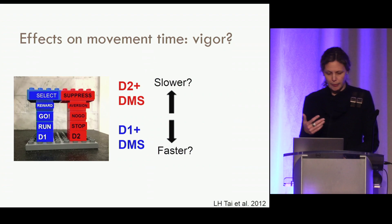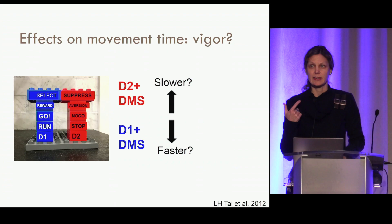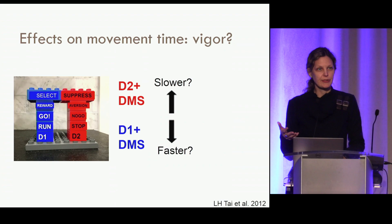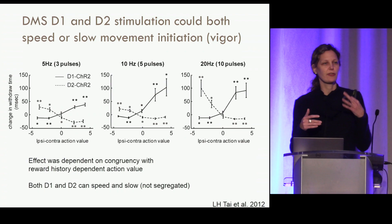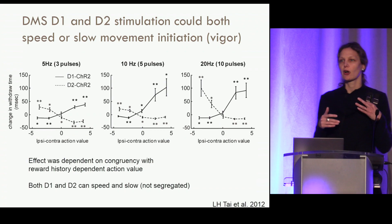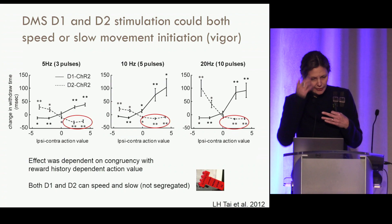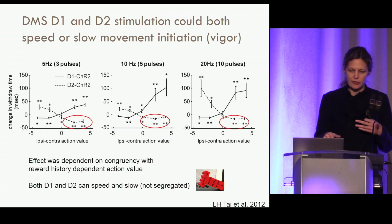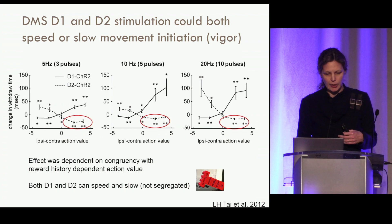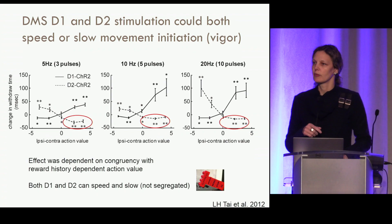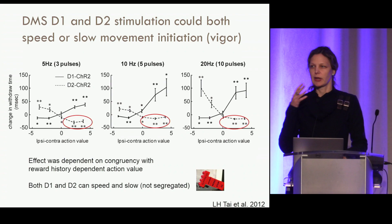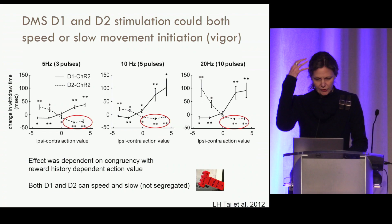We also looked at movement time, expecting the indirect pathway would slow and the direct pathway would speed — but that's not what we saw. There's an interesting crossover: both the direct and indirect pathways can speed and slow the animal depending on whether the stimulation is congruent with the animal's recent choice history. At 5 Hz stimulation, stimulating the D2 pathway can actually make the animal faster than it would have been — significantly faster — because if it's on the ipsilateral side of the pathway, the animal already has evidence to go toward that choice.